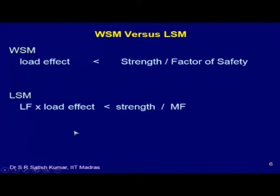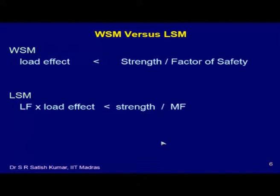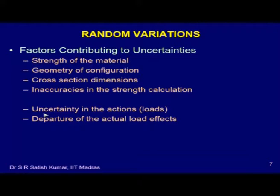In simple terms, in the working stress method the load effect must be less than strength divided by a factor of safety. In the limit state method, this factor of safety is split into two partial safety factors: a load factor, which amplifies the characteristic load, and a material factor, which divides the characteristic strength. The values chosen for these factors depend on their variability — if values are well known we choose close to 1, if they vary a lot we choose a higher value like 1.5 for the load factor.